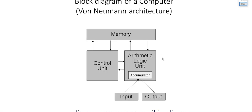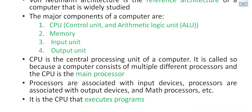The block diagram contains the CPU, which mainly consists of the Control Unit and the Arithmetic Logic Unit. Apart from the CPU, we have main memory — which includes primary and secondary memory — and input/output devices. The major components of a computer are the Central Processing Unit, memory unit, input unit, and output unit. It is called the Central Processing Unit because a computer may have other processors as well, like a math processor or graphics processor, but the main one is the CPU.